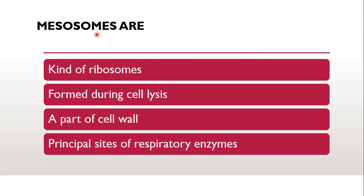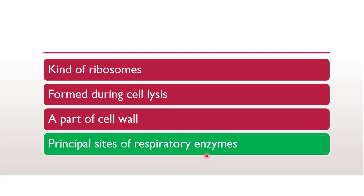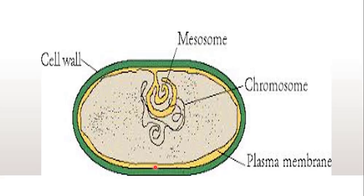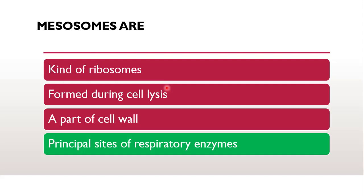Next question: mesosomes are — a kind of ribosome formed during cell lysis, a part of cell wall, or principal sites of respiratory enzymes? The correct answer is principal sites of respiratory enzymes. As seen in the structure, mesosomes are projections of the cell membrane and give increased surface area for cellular respiration. So the cell respiratory enzymes are located in the mesosomes.